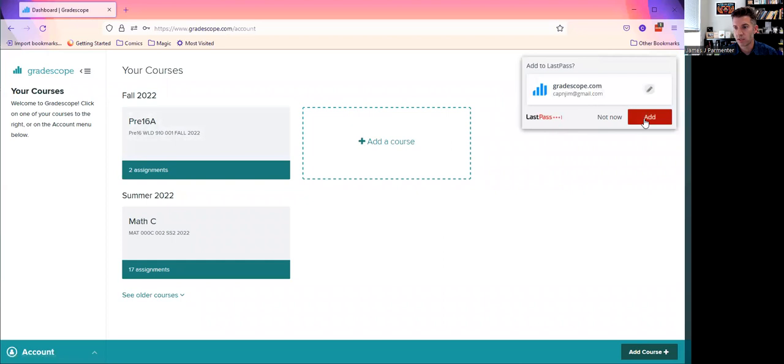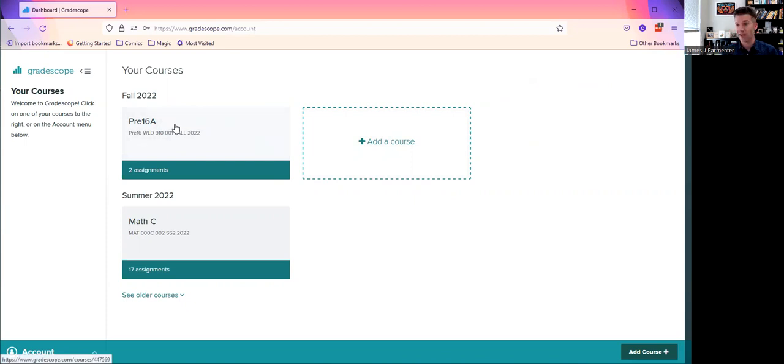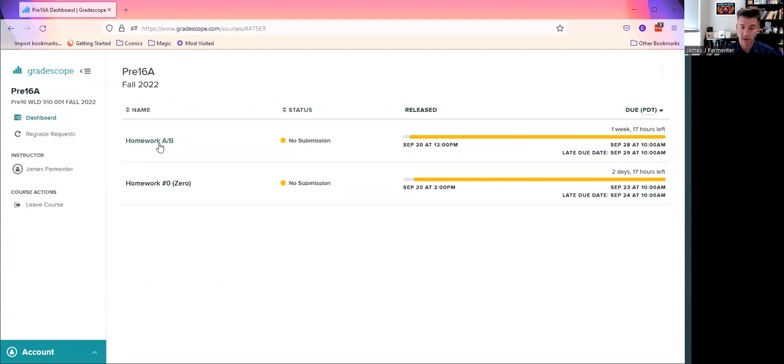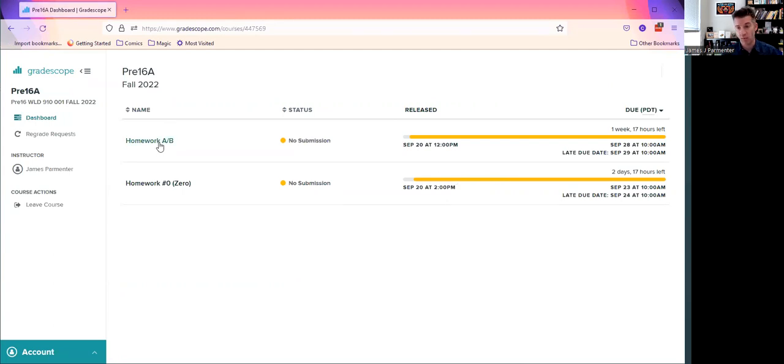So when you're submitting your homework assignment, after you've scanned it using Genius Scan or something else, then you will go to Gradescope and you either get there through Canvas or just go straight to Gradescope. You'll click on the class and you'll click on the correct assignment. In this case, it's homework A/B.